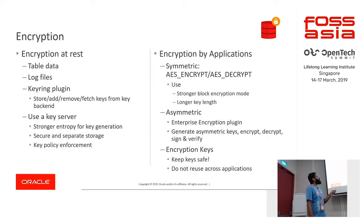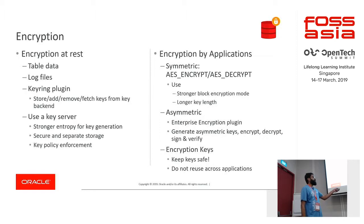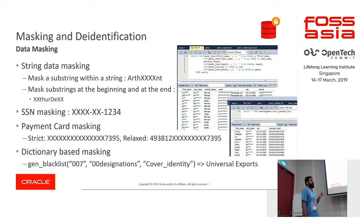If your application relies on symmetric or asymmetric encryption, there is AES_ENCRYPT and AES_DECRYPT for symmetric encryption. On the enterprise server, we have the enterprise encryption plugin which provides asymmetric encryption as well — it also allows you to sign and verify content. Always keep your keys safe. With the enterprise edition, MySQL also has masking and de-identification functions — string-based data masking for partial or full content, specific masking like SSN or payment card masking, and dictionary-based replacement to convert values to a cover identity.